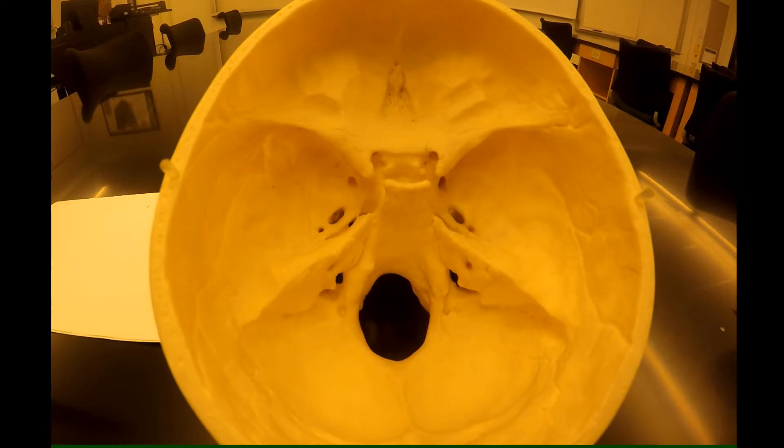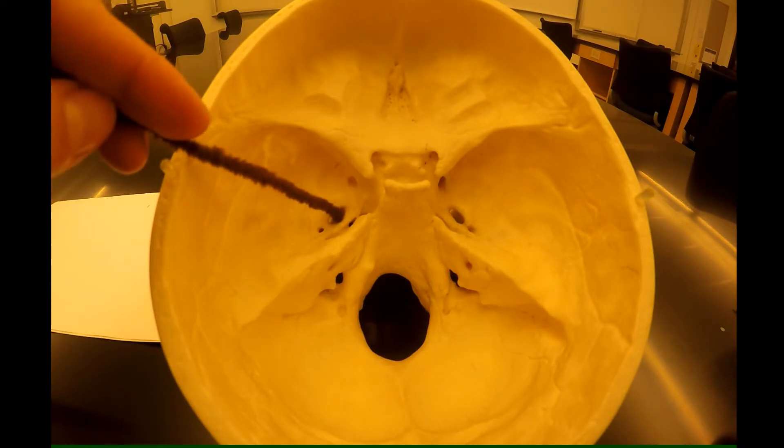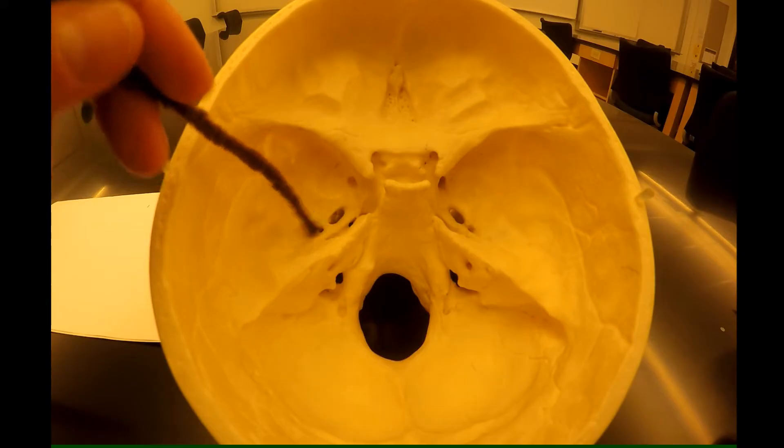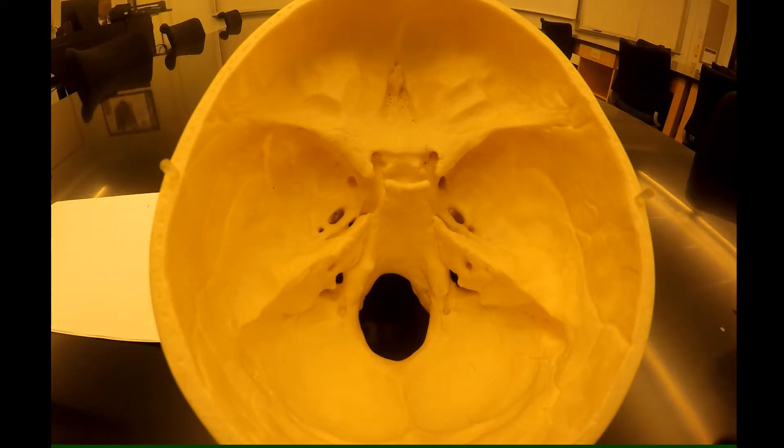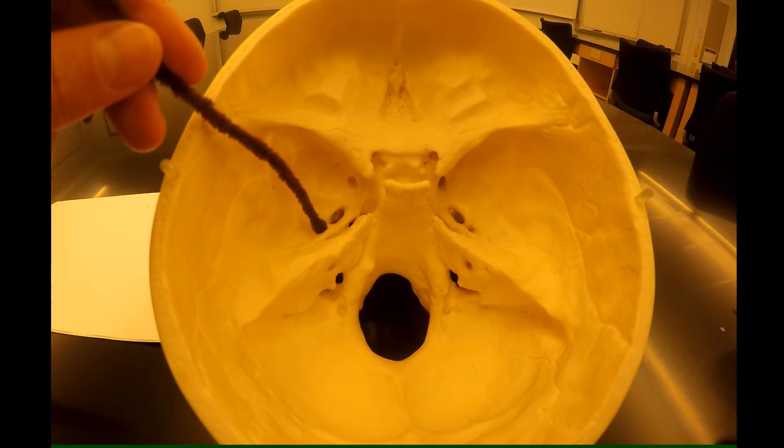So when learning the holes of the skull, you should always start with your R, O, S. They're all in a line and that's your foramen rotundum, foramen ovale, and foramen spinosum.